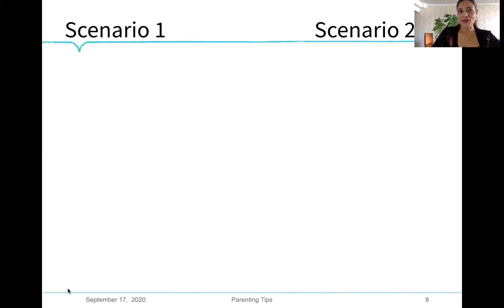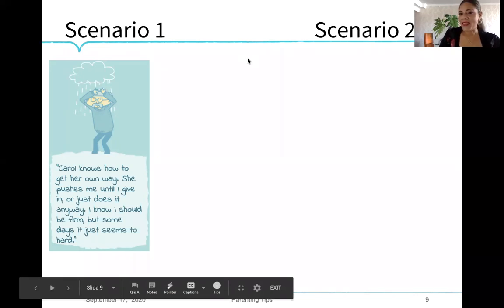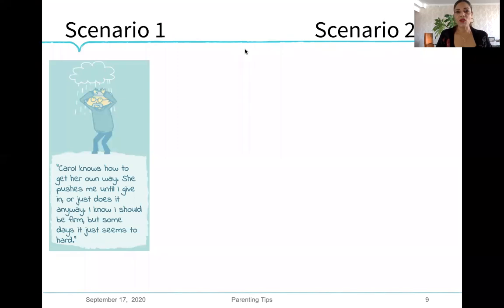So now let's see some scenarios. Carol knows how to get her own way. She pushes me until I give in or just does it anyway. I know I should be firm, but some days it just seems too hard. Have you ever felt like this? You can use the chat or unmute yourself to make comments or to respond. What do you think might be happening here? What do you suggest? How would you manage this situation?